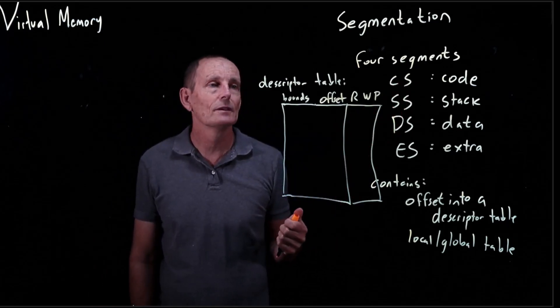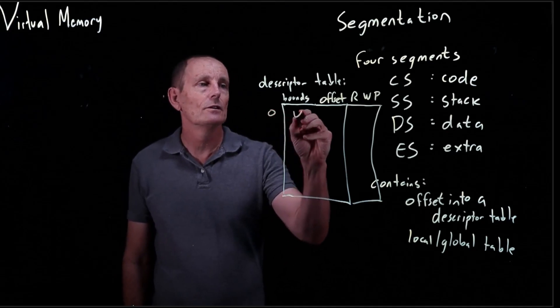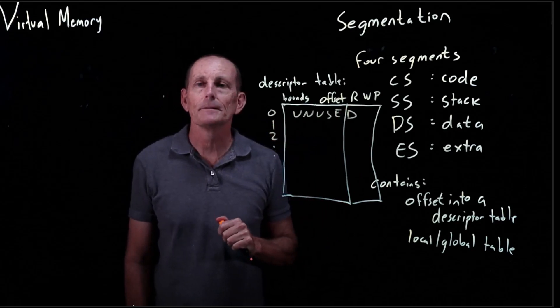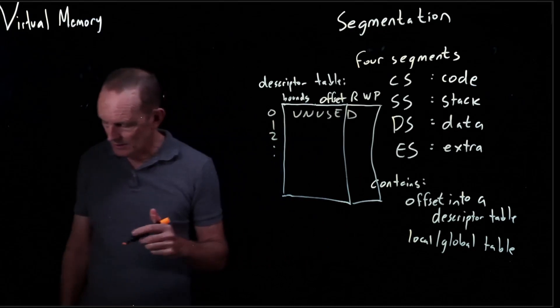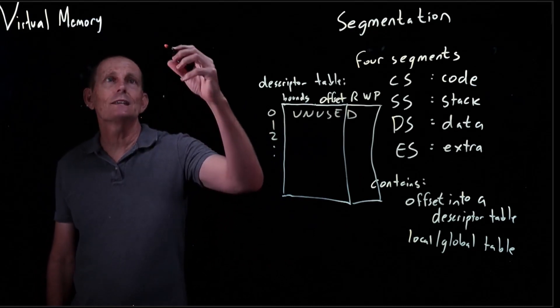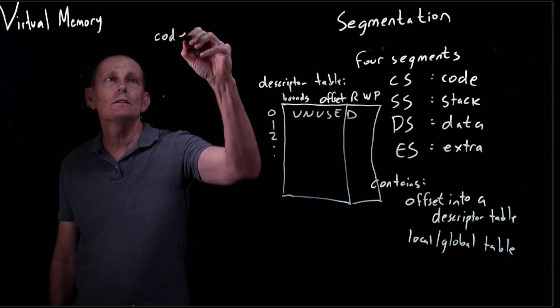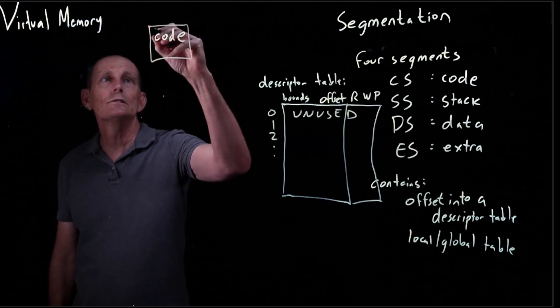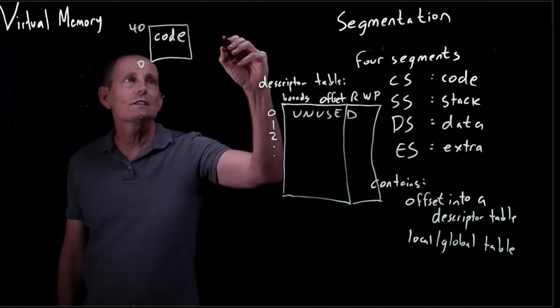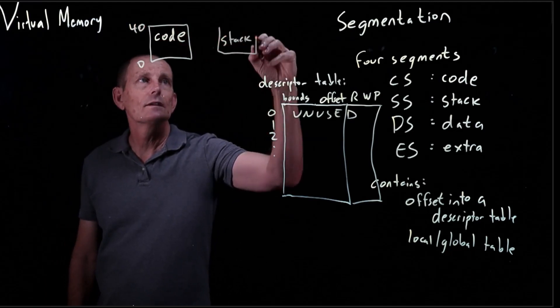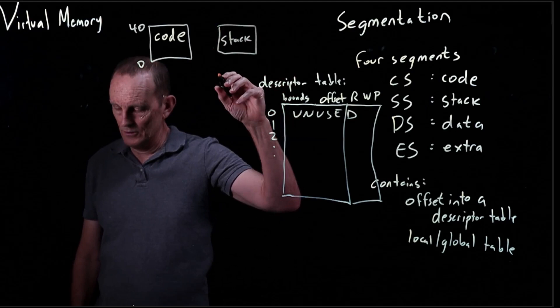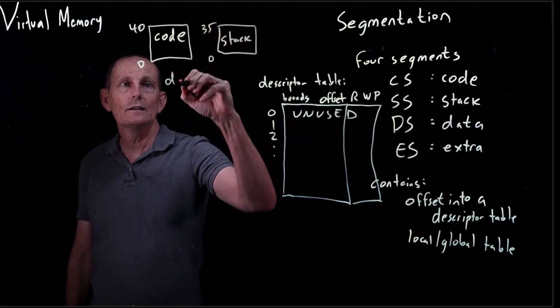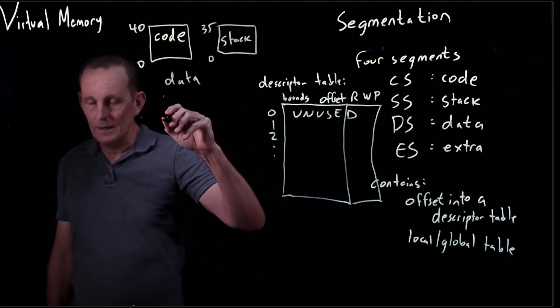Zero is unused, and so we have some number beyond that. So let's look at a particular piece of code. Let's say we've got the following setup: we've got a code segment that goes from 0 to 40, we've got a stack that goes from 0 to 35, we've got data that goes from 0 to 12.